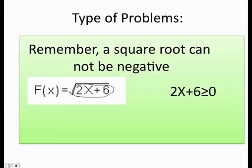And yes, you can have a square root that equals to zero. Therefore, 2x plus 6, greater or equal to zero, and I have to solve for x. I pass the 6 to the other side, and then I divide both sides by 2. Finally, I get that x is greater or equal to negative 3.